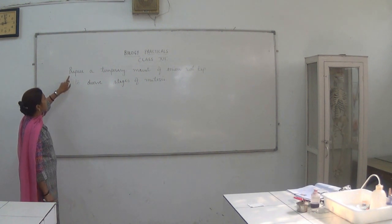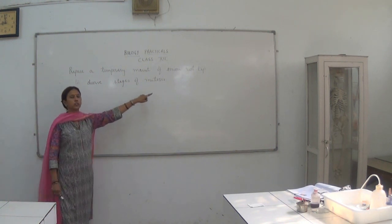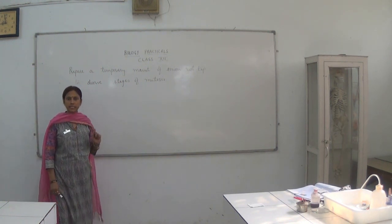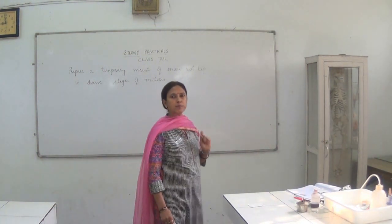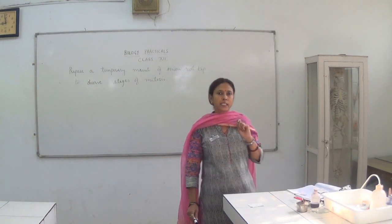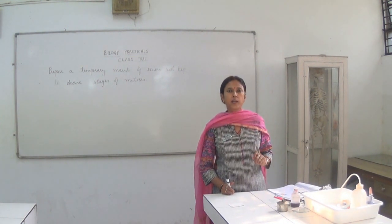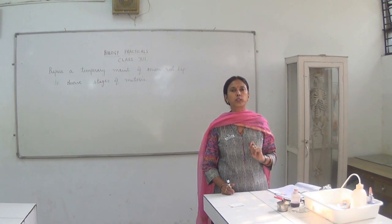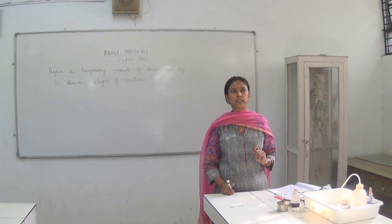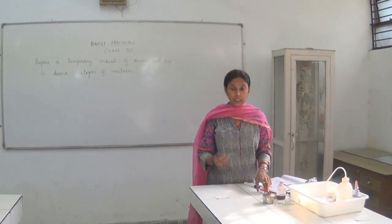This experiment deals with the preparation of a temporary mount of onion root tips to observe stages of mitosis. Mitosis is the cell division which takes place in all the somatic cells of living organisms and helps in the growth of the body. This is observed in the case of both plants and animals. For the preparation of the slide, we are going to use plant material — the onion root tips — which contain the meristematic region where cell division goes on continuously.